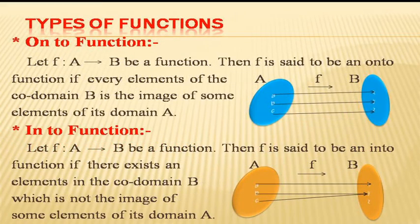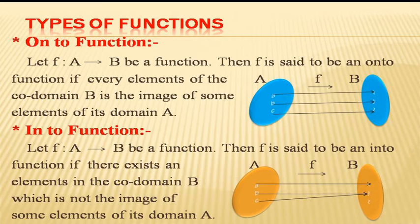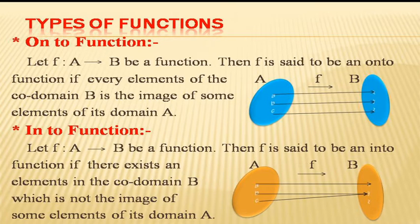The next one is the onto function. Onto means that every element in the co-domain is the image of some element of its domain — that is, there is no element left in the co-domain which is not an image of any element of the domain. In the diagram, x is the image of a, y is the image of b, and z is the image of c. There are no elements left in B which are not an image of any element of A, so this is an example of an onto function.